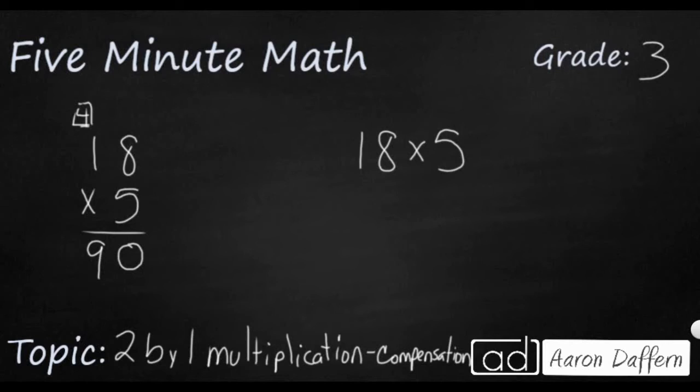Well, compensation shows that you could change a number, one of the factors, so that it's a little bit easier to multiply with. And you get the correct answer if you make sure to change the product back. So 5 is pretty easy to multiply with. Let's take a look at this 18. This 18 is pretty close to 20, so what I'm going to do is I'm going to change in my brain that 18 to 20.